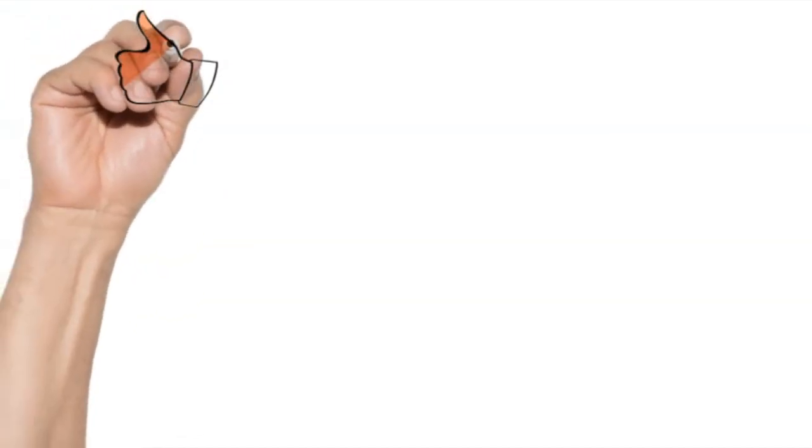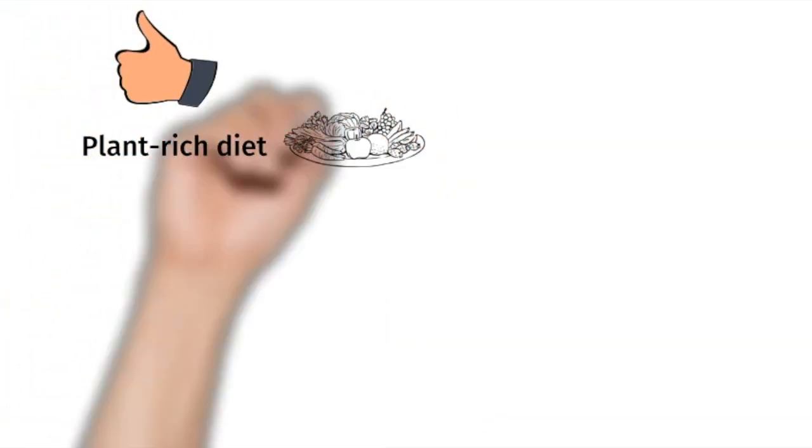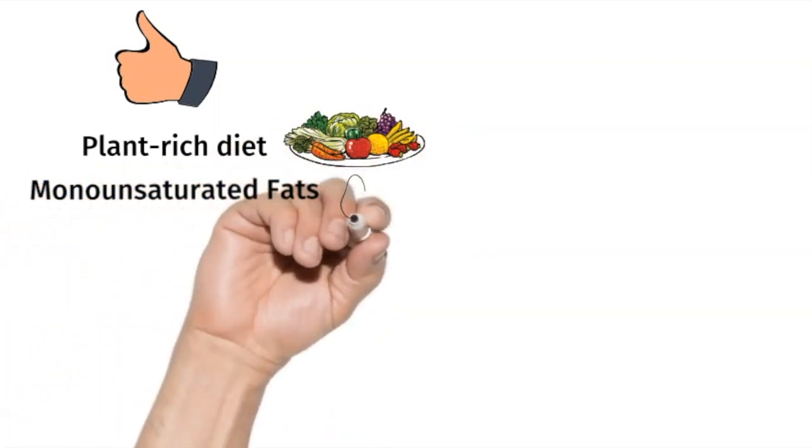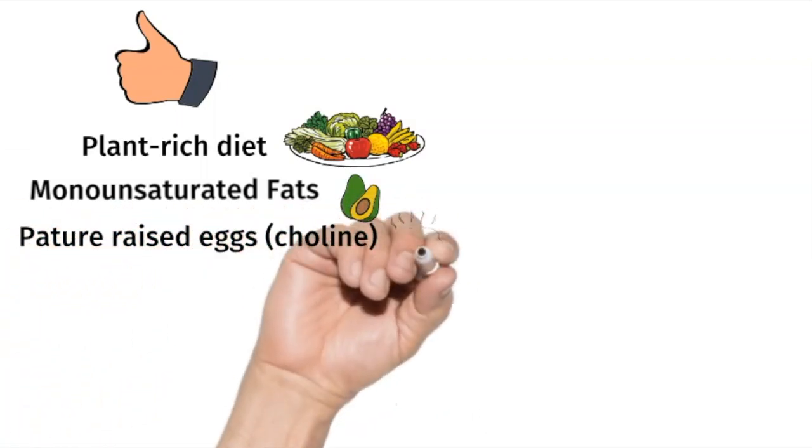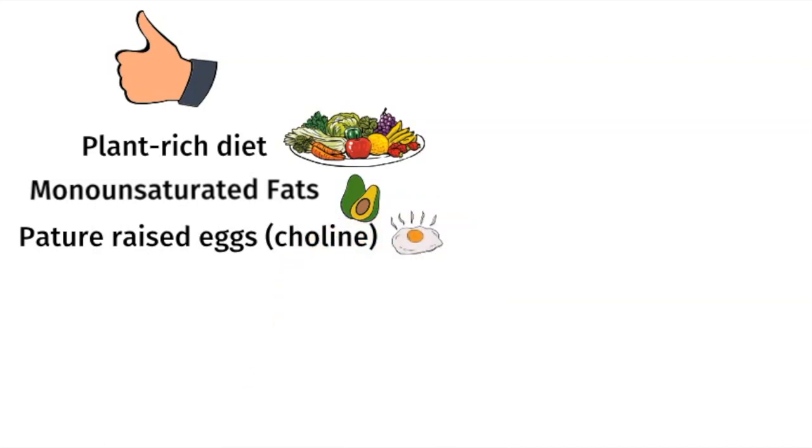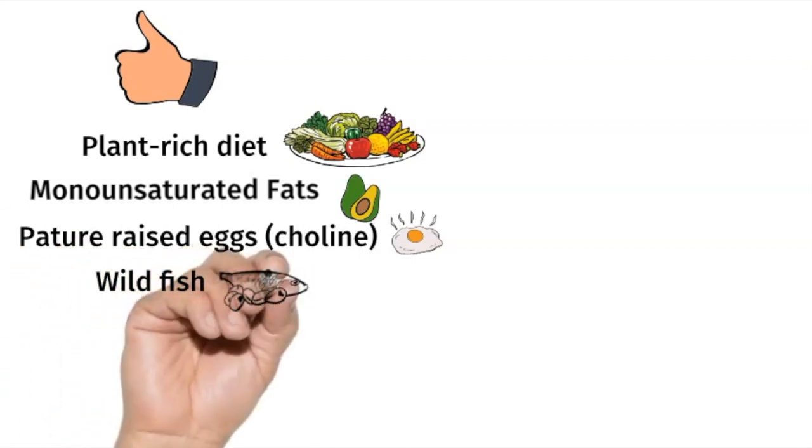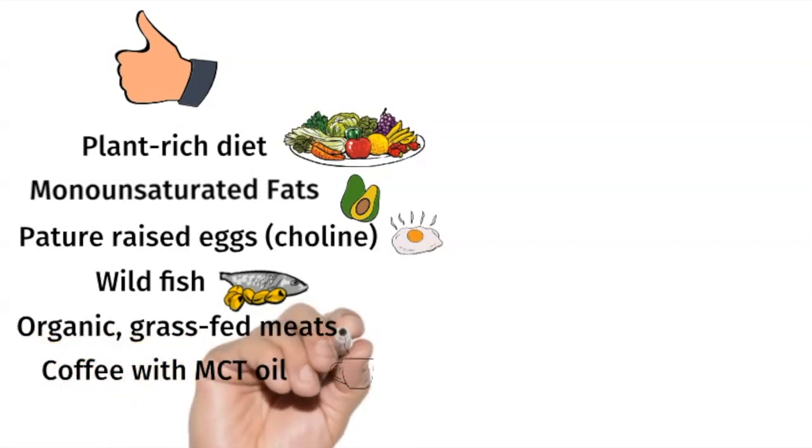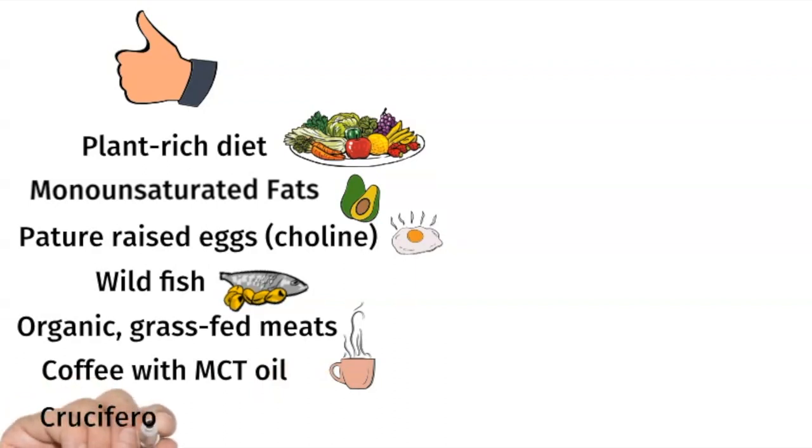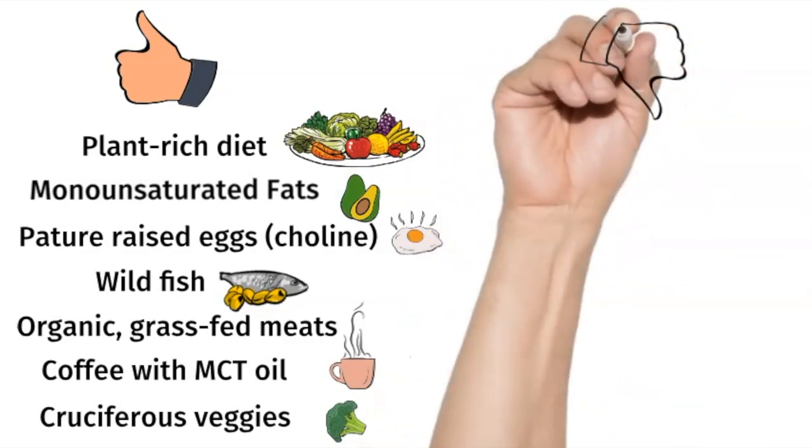Let's go over more details on what you want to include and avoid in your diet. Make sure your diet is plant-rich by including a lot of vegetables. Monounsaturated fats like olive oil, avocados, nuts, and seeds are good for the brain. Pasture-raised eggs are a great source of choline, which is found in the yolks, and this can help your brain make more acetylcholine, which is that important brain neurotransmitter. Eating more wild fish like salmon is a great way to get omega-3 fatty acids. Make sure that your chicken and meats are organic or grass-fed. Did you know that coffee improves cognitive function? And you can pair it with MCT oil, which helps your liver generate ketones, which is also brain fuel. Cruciferous vegetables like broccoli, cauliflower, brussel sprouts, and kale are superfoods because they have compounds that promote detox pathways in the body.